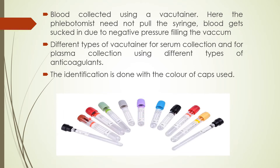Blood collected using a vacuotainer: the phlebotomist does not need to pull the syringe — blood gets sucked due to negative pressure filling the vacuum. We have different types of vacuotainers for serum collection and plasma collection using different anticoagulants. Identification is done with the color of the caps.